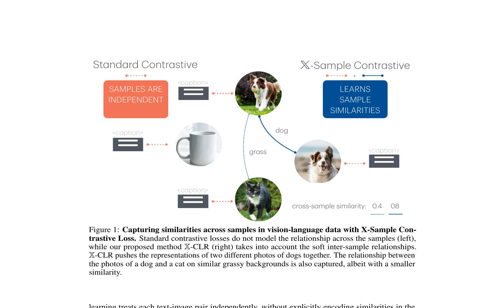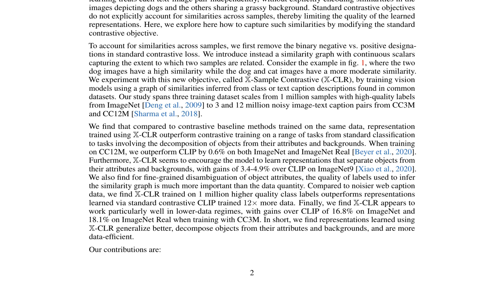The authors experiment with XCLR by training vision models using a graph of similarities inferred from class or text caption descriptions found in common datasets, including ImageNet, CC3M, and CC12M. Results show that XCLR outperforms contrastive baseline methods on a range of tasks, including standard classification, object decomposition, and fine-grained disambiguation of object attributes.